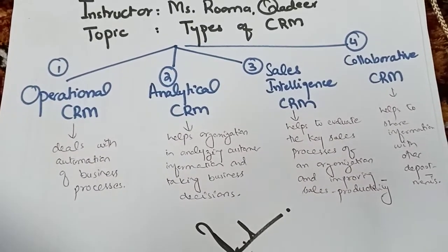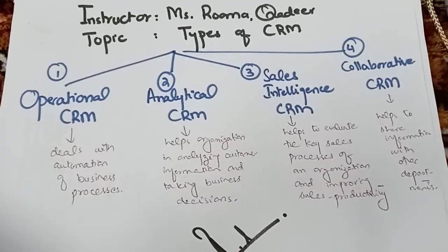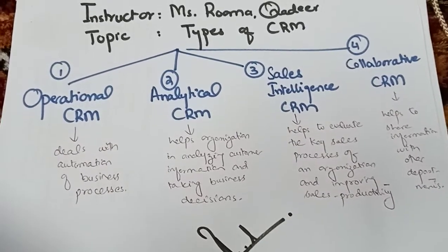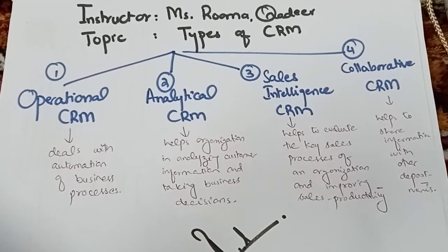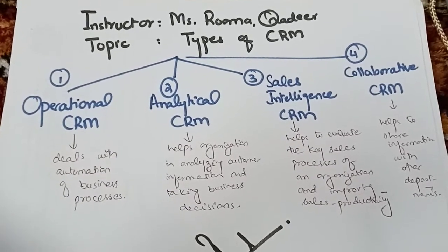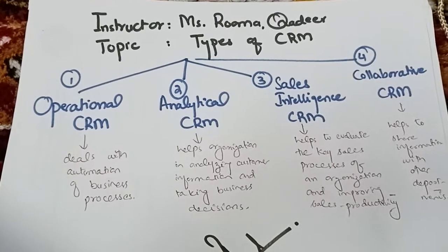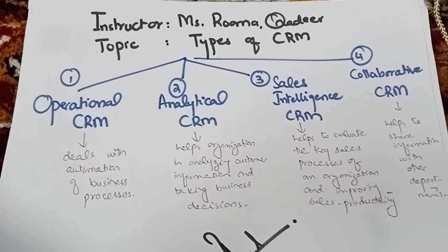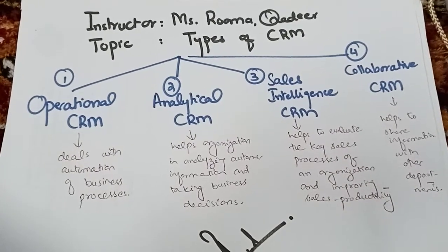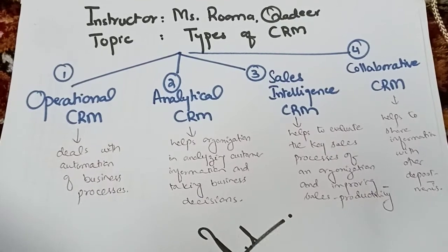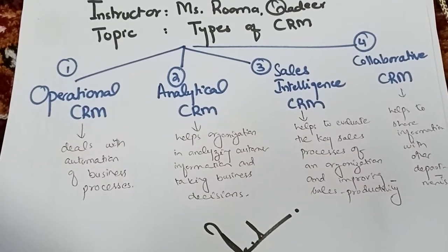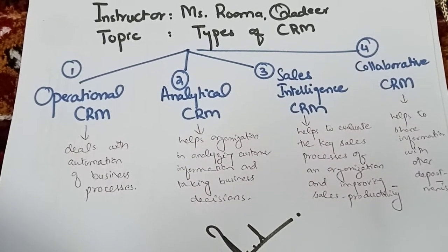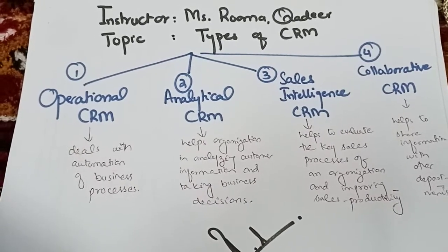Second, we have analytical CRM. The information that we have in the CRM database — analytical CRM analyzes all the information and tries to get the most required or relevant information that the organization is looking for. This ultimately helps the organization make the best possible decisions. It helps in analyzing customer information and taking business-related decisions in a good way.